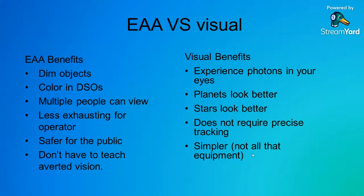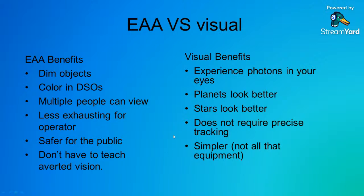EAA is a little less exhausting for the operator, it's safer for the public, and we don't have to teach averted vision. The visual benefit, of course, is you experience the photons with your own eyes — planets look a lot better. Visual also doesn't require precise tracking and it's simpler. It's tough to do EAA on a scope that is not tracking, so you've got some equipment considerations.